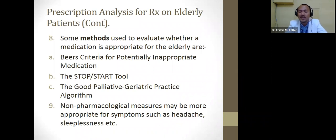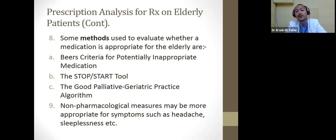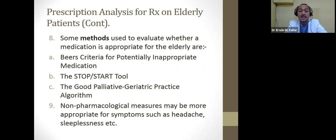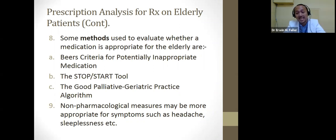There are different methods we can use to analyze prescriptions correctly for geriatric patients. One is the BEERS criteria for potentially inappropriate medications. Another is the STOPP-START tool. There is also the good palliative geriatric practice algorithm, and non-pharmacological measures — such as massage, lavender oil — appropriate for conditions like insomnia, headache, and sleeplessness that don't necessarily need to be treated with certain medications.